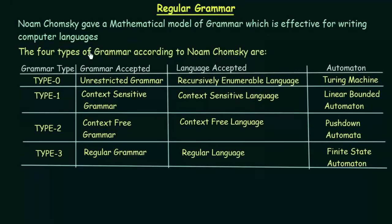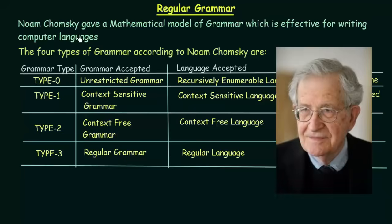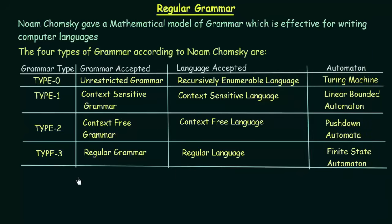Noam Chomsky gave a mathematical model of grammar which is effective for writing computer languages. According to Noam Chomsky, there are four types of grammars which we will discuss here.